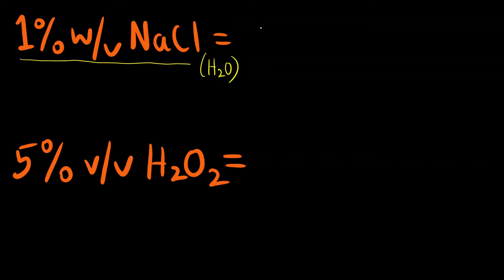So 1% weight by volume means 1 gram of NaCl - it is mass of solute divided by volume of solution. So 1 gram of NaCl is dissolved in, or we can say it is present in 100 ml of solution.